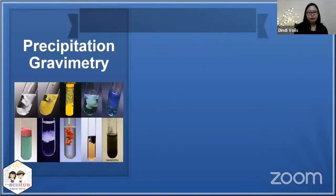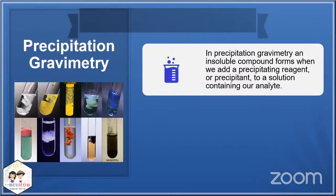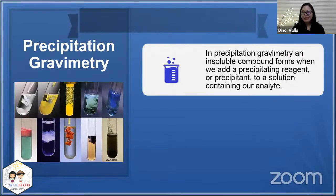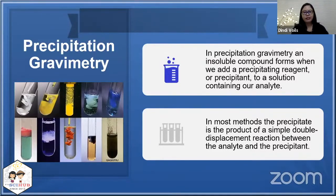The third type of gravimetry is precipitation gravimetry. In this type, you use a precipitating reagent or precipitant added to a solution containing the analyte. Most precipitation gravimetry methods involve a simple double displacement reaction between the analyte and the precipitant.